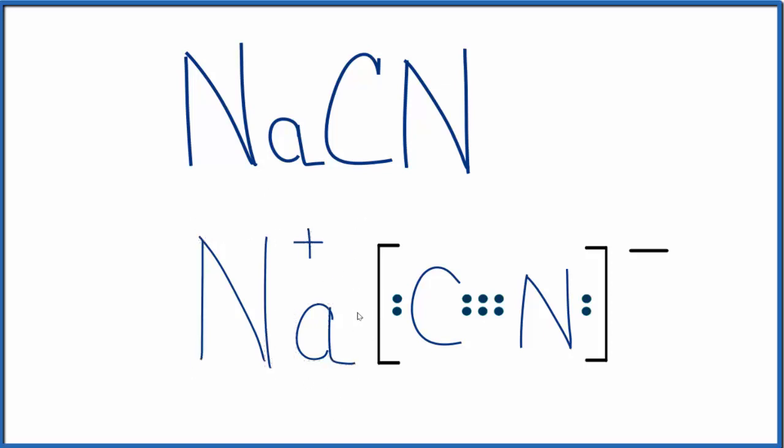Sodium has the positive charge because it lost an electron. The cyanide ion got that electron and becomes negative. To show that we transferred electrons—we're not sharing these electrons—that's why we have the brackets around the cyanide ion here.